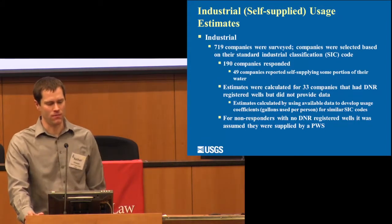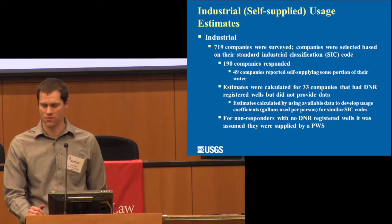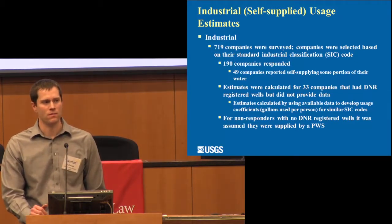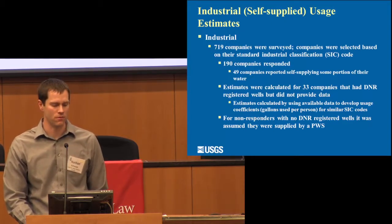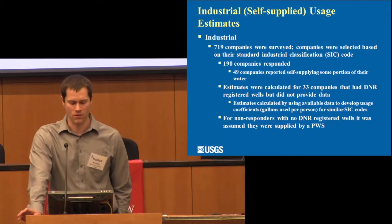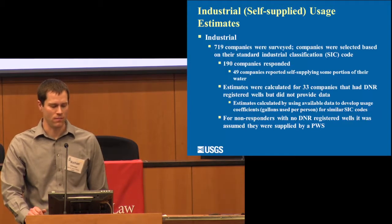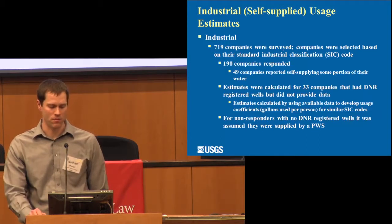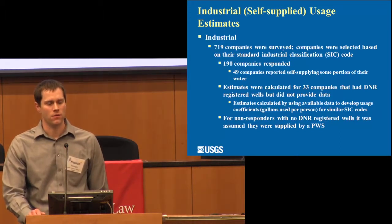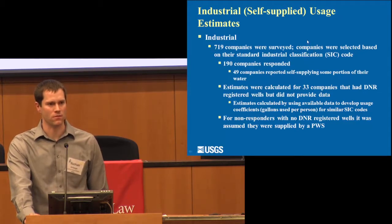For industrial — this is just self-supplied industrial, since many companies take from public water systems — we surveyed based on standard industrial classification codes. The National Water Use Team gave us a list of primary water users we targeted for surveys. Out of 719 surveyed, 190 replied, and only 49 reported as self-supplied. Additionally, 33 other non-responding companies had DNR registered wells, so we estimated for those companies since they most likely used those wells.